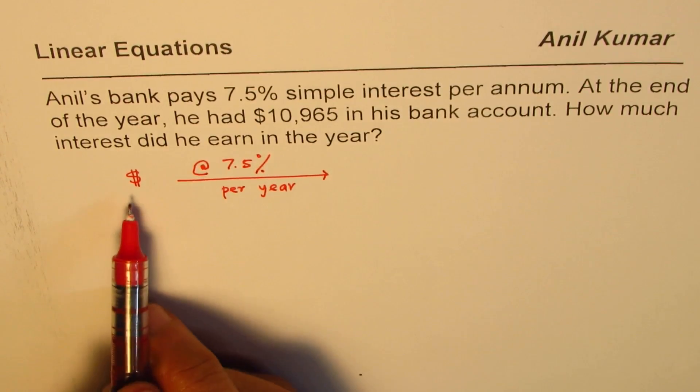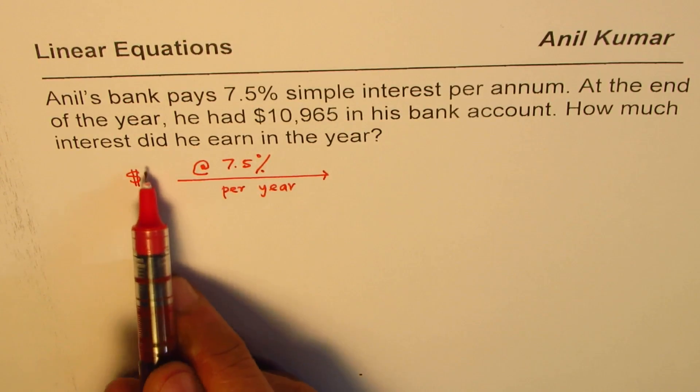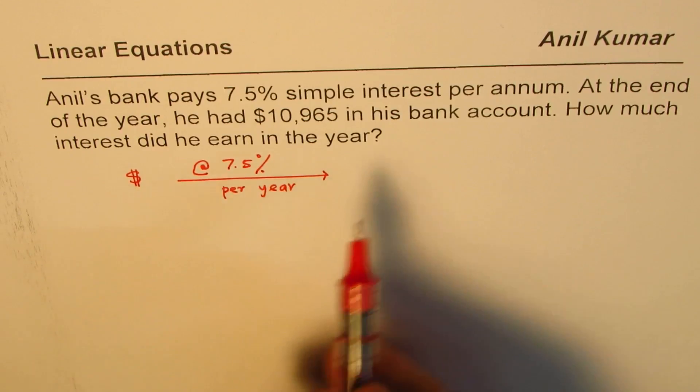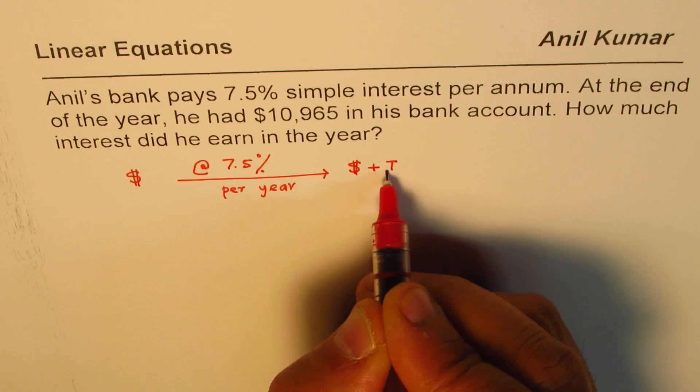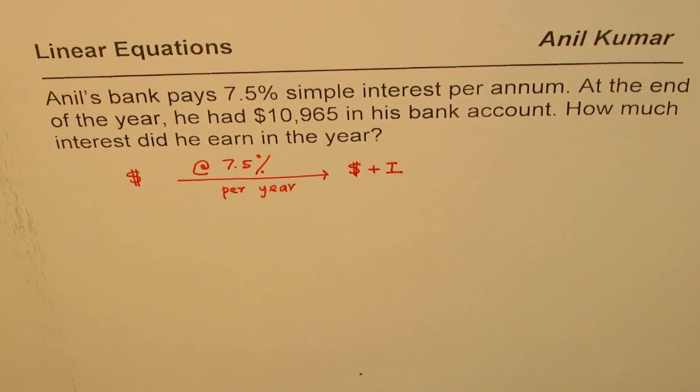We are assuming the amount was just resting here in the account and after one year, we got this amount plus the interest. That is what happens. So, this is the condition which we are working with.